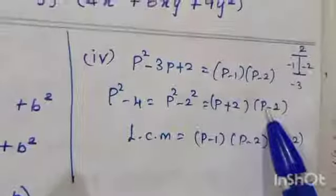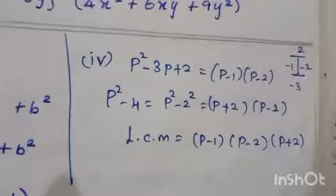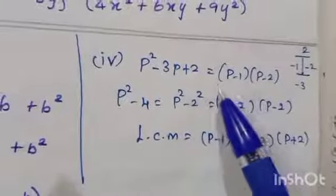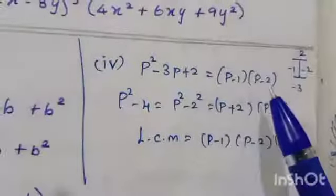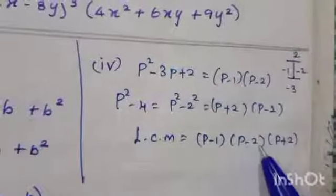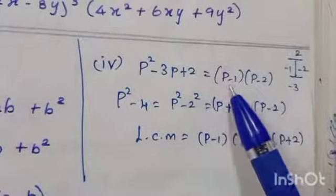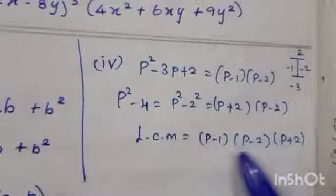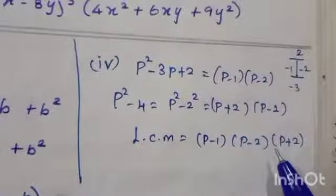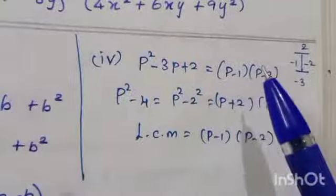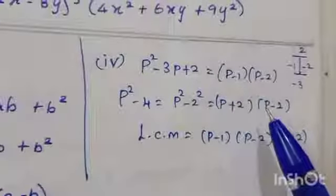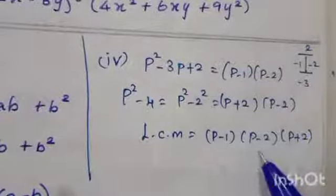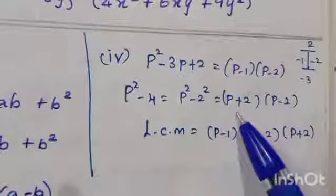Now compare the factors: (p-1)(p-2) and (p+2)(p-2). The common factor is (p-2), written once. The independent factors are (p-1) and (p+2). Therefore, the LCM = (p-1)(p-2)(p+2).